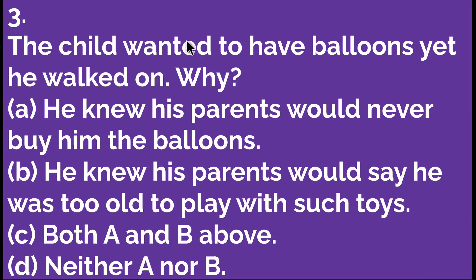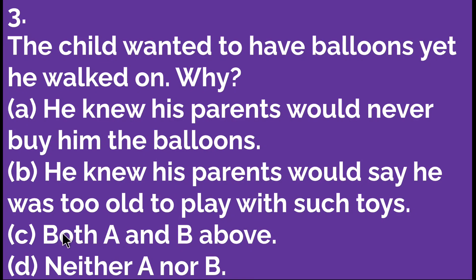The next question is: the child wanted to have balloons, yet he walked on. Option A: he knew his parents would never buy him the balloons. Option B: he knew his parents would say he was too old to play with such toys. Option C: both A and B above. Option D: neither A nor B. Both A and B are the right options, so C is the right option — both A and B above.